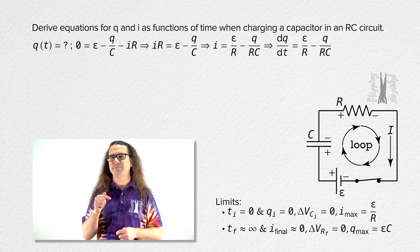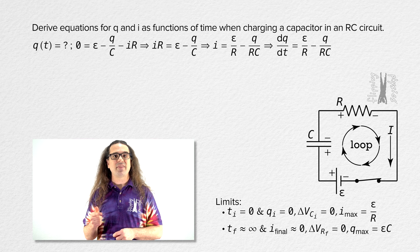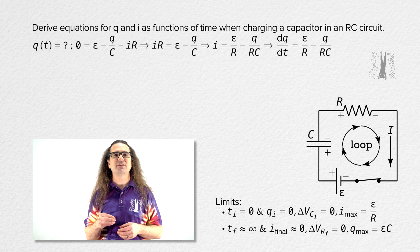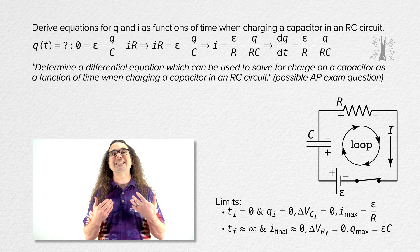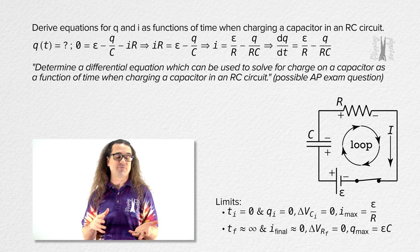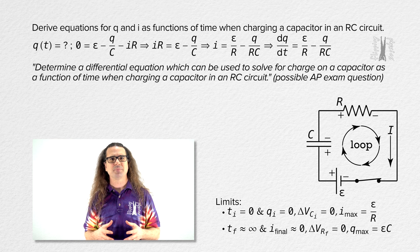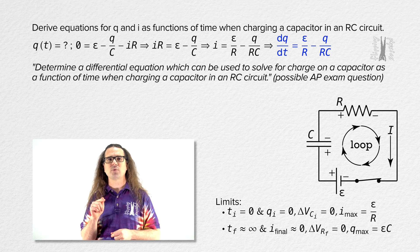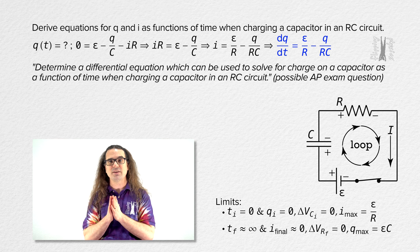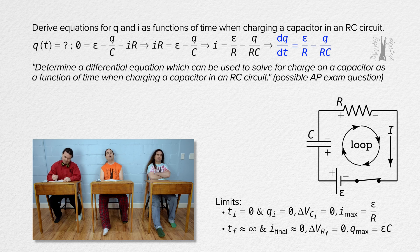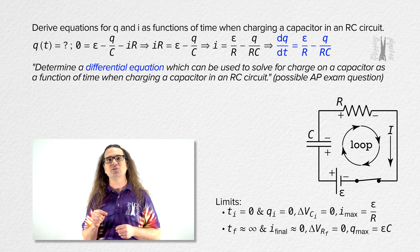Typically on an AP free response question where they ask you to solve for something like this, they will put it in two parts. First, they ask you to determine a differential equation which can be used to solve for the charge on the capacitor as a function of time. This equation — the derivative of charge with respect to time equals EMF over resistance minus charge over the quantity resistance times capacitance — is the answer to that question.